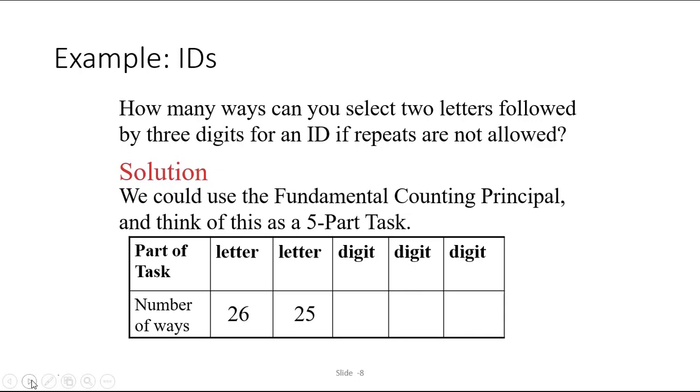Then we picked the digits. In our system of counting numbers, there are 10 digits, 0, 1, 2, 3, 4, 5, 6, 7, 8, and 9. So for the first digit, we have 10 possibilities. But since repetition is not allowed, once we use up that first digit, we only have 9 left to choose from, and then 8 for the third. If you multiply 26 times 25 times 10 times 9 times 8, you get 468,000 possible IDs that have this construction.